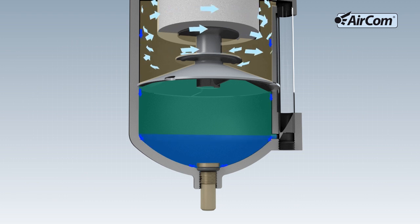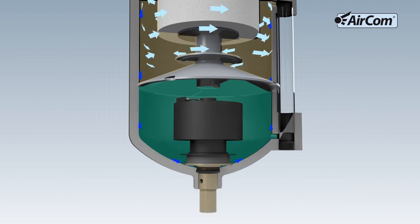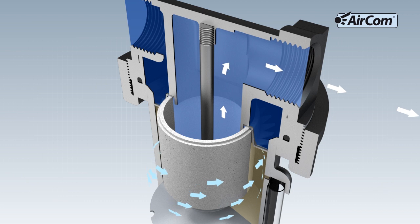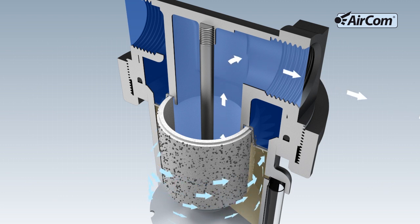The condensate collects in the slowdown zone and can be removed from the filter using a manual drain or an automatic drain. The air from which the condensate has been removed now flows through the filter element to remove the remaining dirt particles.